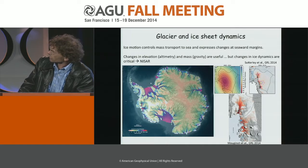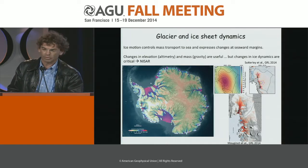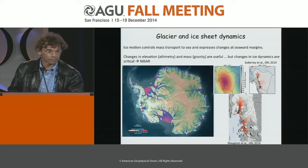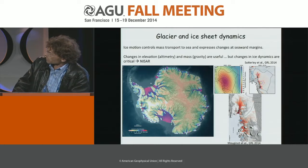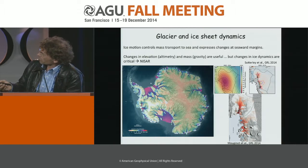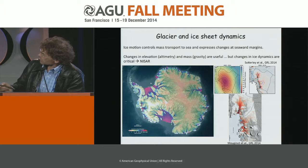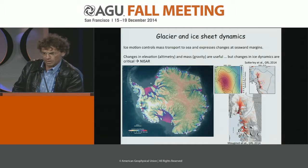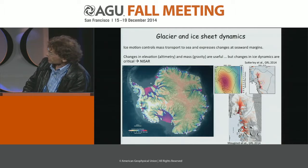To look at the contribution of ice sheets to sea level, it's absolutely fundamental to look at ice motion. Ice motion controls the flow of ice towards the sea margins and expresses the impact of climate change. We are also using gravity data from the GRACE mission and altimetry data to look at ice sheets and mass balance. GRACE is extremely useful to look at mass change, but does that at coarse resolution and does not provide information on ice dynamics. Altimetry provides information about the places that are changing, but not necessarily indicative of a change in motion.